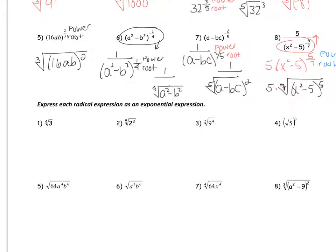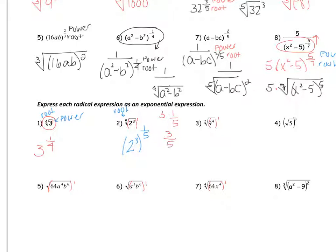Now let's go the reverse way — given the radical, can you give me the exponential expression? This is the fourth root, so there's always an imaginary one — you can put everything to the first power. They're all being raised to one-fourth or one-third. So for example one, it's three to the one-fourth power because four is the root and one is the power. For example two, five is the root that goes on the bottom, so it's two to the third to the one-fifth power. We can multiply three times one-fifth to get three-fifths, so two to the three-fifths power.